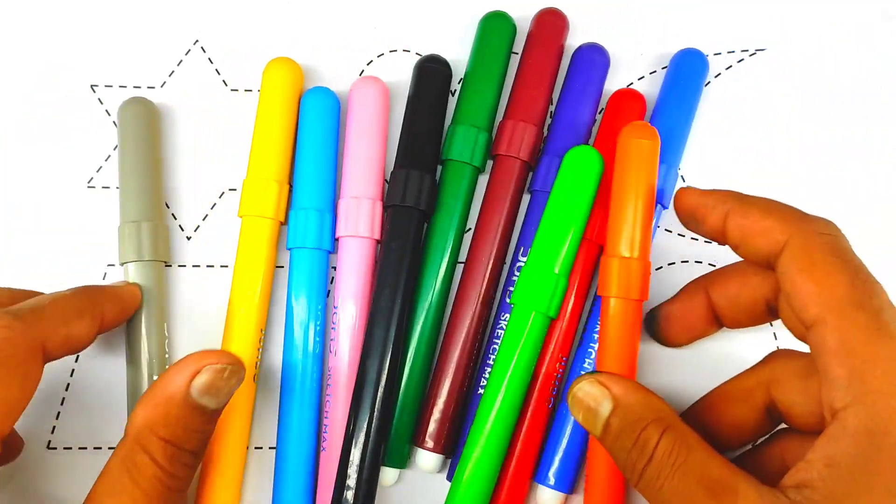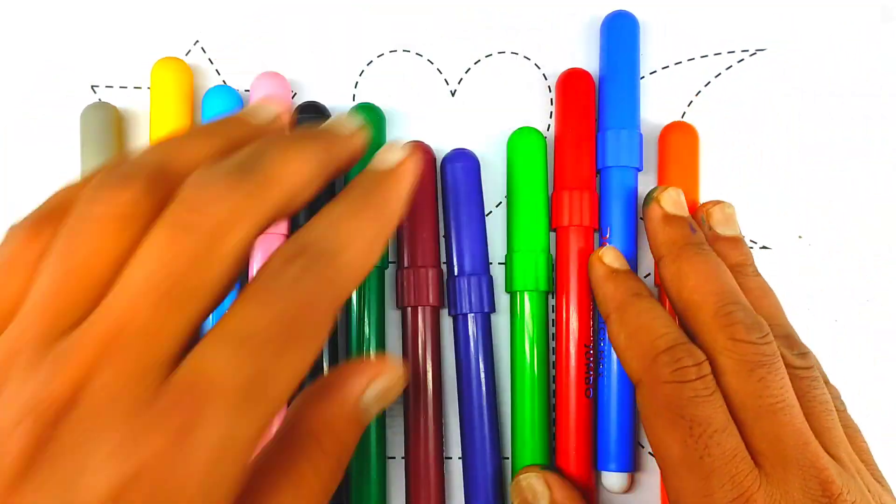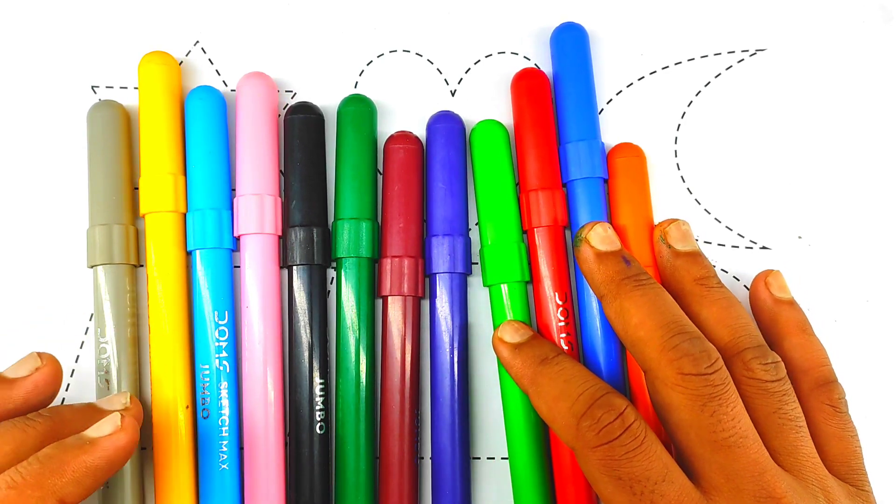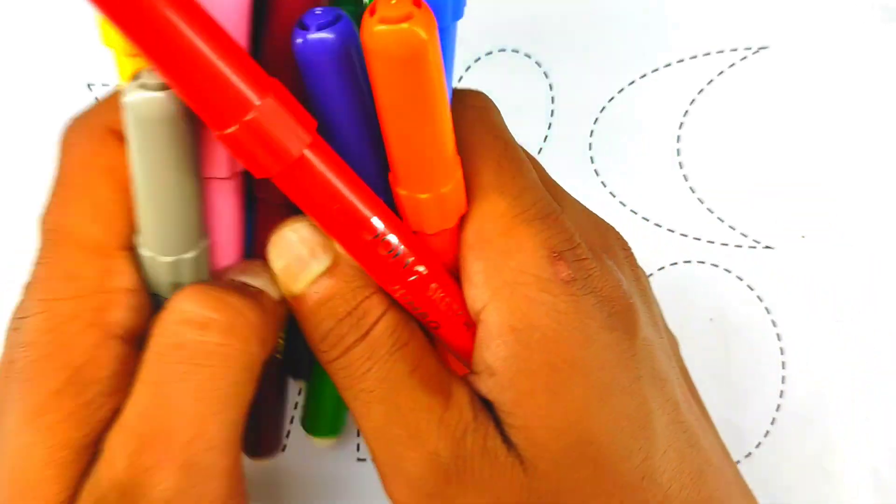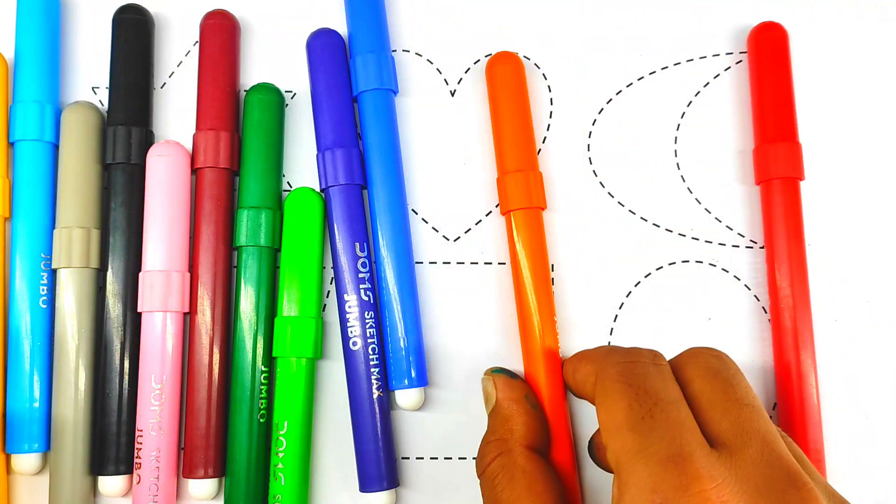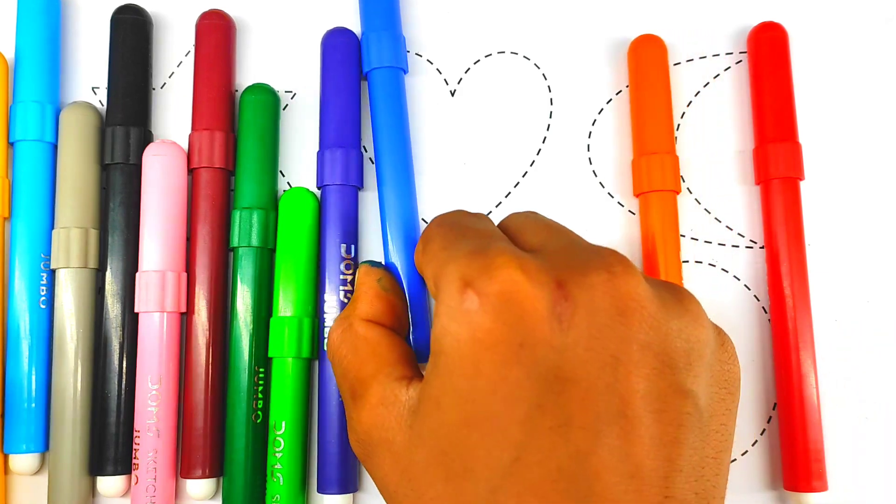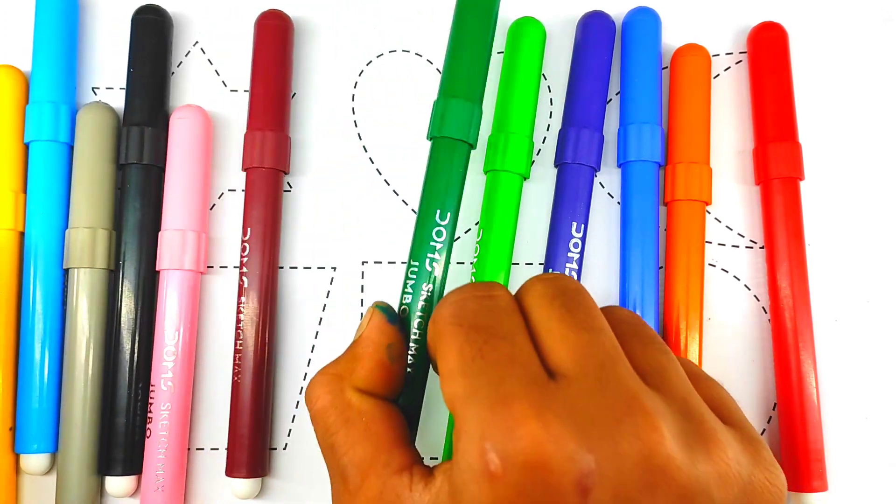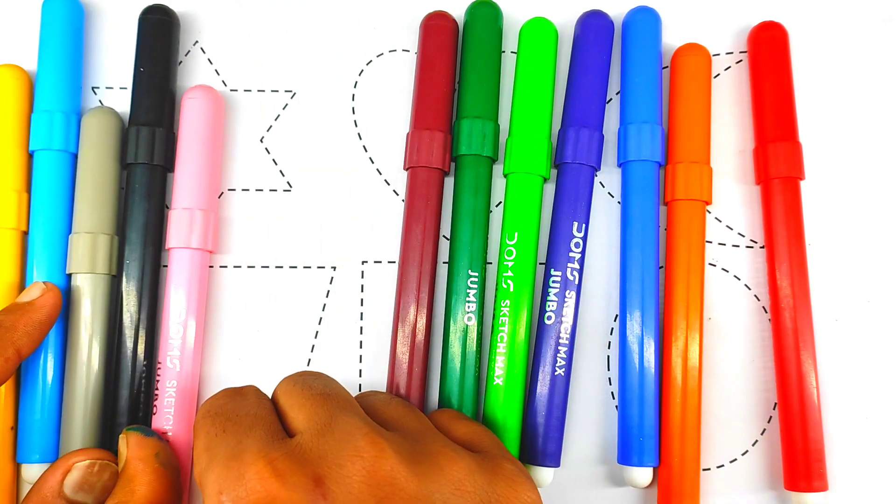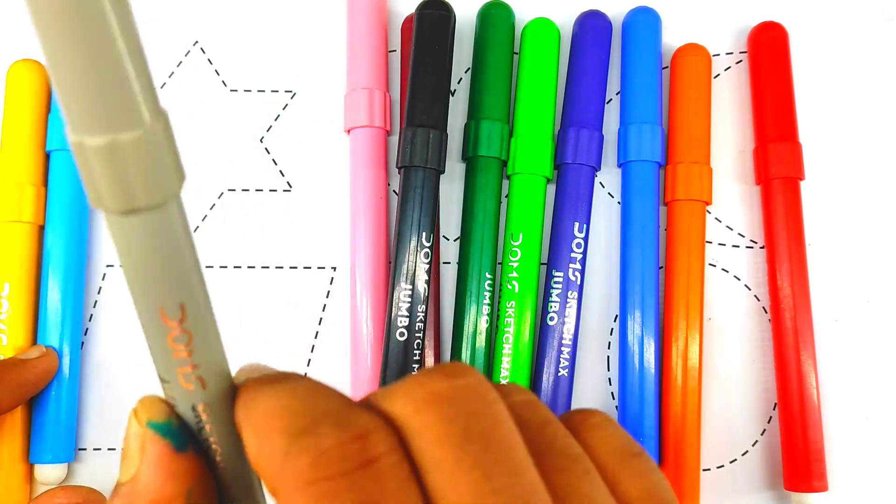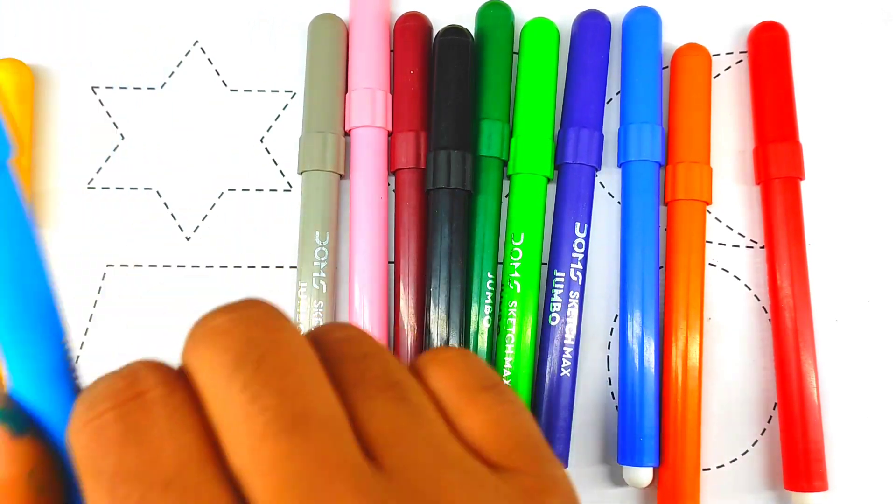Hello kids, today learning colors name and shapes name, drawing shapes, colors name and shapes name. Red color, orange color, blue color, purple color, light green color, green color, brown color, light pink color, black color, silver color, sky blue color, yellow color.